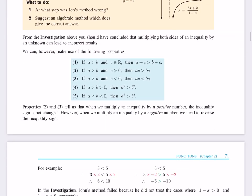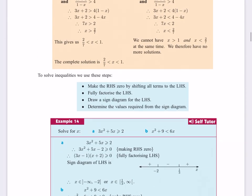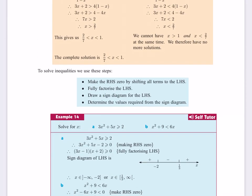I'm scrolling down here and I'm gonna highlight this part, this little blue box. They're giving you the steps: make the right-hand side zero by shifting all the terms to the left, fully factorize the left, draw a sign diagram, and from the sign diagram you can figure it out. They do a couple examples you can just really quickly look at.